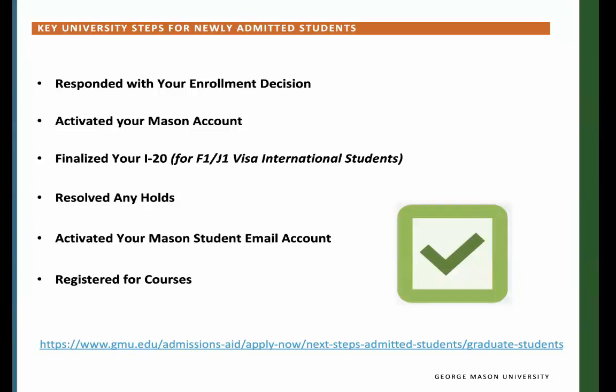Key University Steps for Newly Admitted Students. As part of the process for newly admitted students at Mason, you should complete the following tasks as listed on the slide. If you have any questions, please feel free to reach out at globama.gmu.edu. For more details, visit the Global Affairs website under the Graduate Student section or by following the link listed below on the slide.